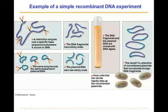Recombinant means we're combining DNA from two sources — you can see the two colors there. We would then have to add DNA ligase to make the covalent bonds in the backbone of DNA to hold it together. Once we did that, the host cells could easily be induced to take up the plasmids, and then we have little factories to make as many of these recombinant genes as we want. So that's the way we use plasmids.